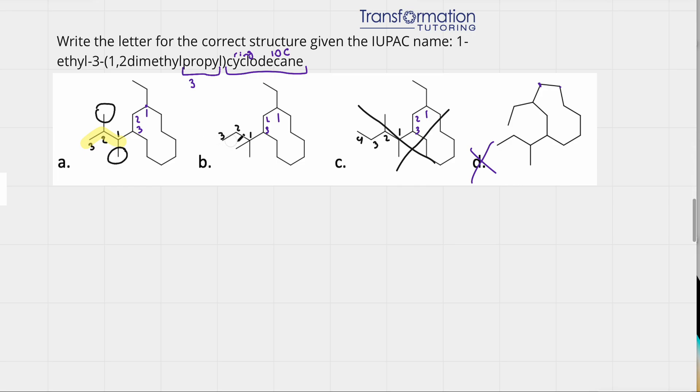Here, this is our chain. And we have 2 substituents, this one and this one. But they're both on carbon number 1. So this cannot be 1,2-dimethyl propyl. This would be 1,1-dimethyl propyl. Because both methyl groups are on carbon number 1. So choice A should be the right answer for this question.